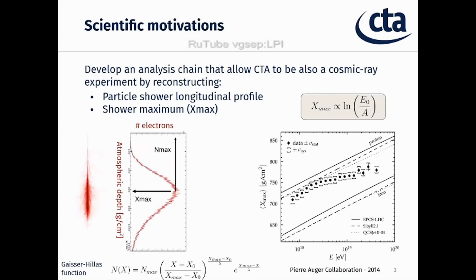Our scientific motivation is to develop an analysis chain that allows the CTA, the Cherenkov Telescope Array, to also be a cosmic ray experiment by reconstructing the longitudinal shower profile. This is the number of electrons produced along the atmosphere. There are two important observables: Nmax, related to the energy of the air shower, and Xmax, which is related to the mass of the primary particle. Xmax corresponds to the position where the maximum number of shower particles are produced.